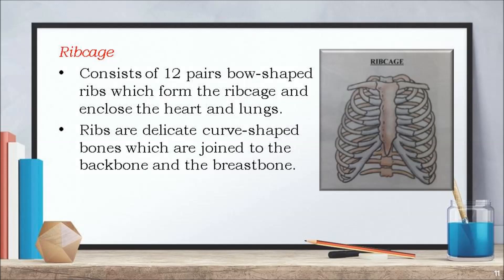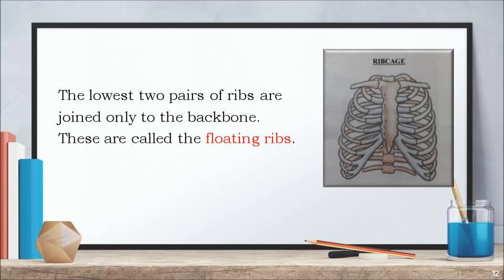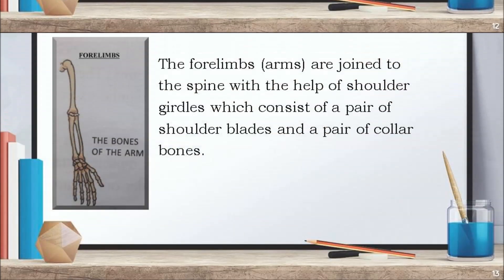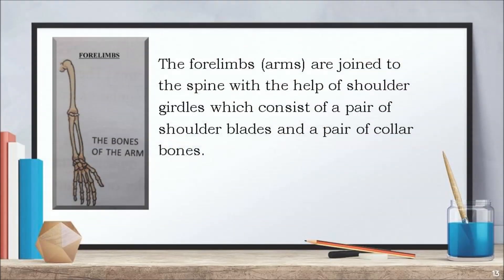The ribcage consists of 12 pairs of bow-shaped ribs which form the ribcage and enclose the heart and lungs. Ribs are delicate curve-shaped bones which are joined to the backbone and the breast bone. The lowest two pairs of ribs are joined only to the backbone and these are called the floating ribs. The forelimbs are joined to the spine with the help of shoulder girdles, which consist of a pair of shoulder blades and a pair of collar bones.